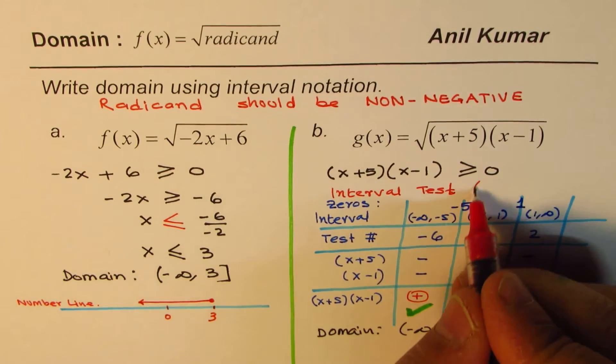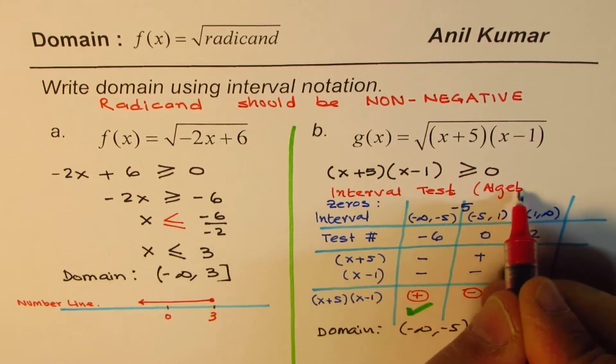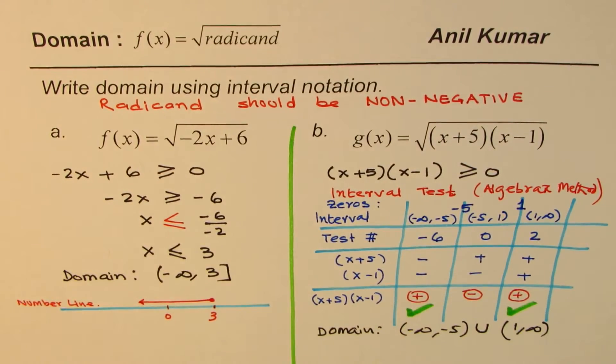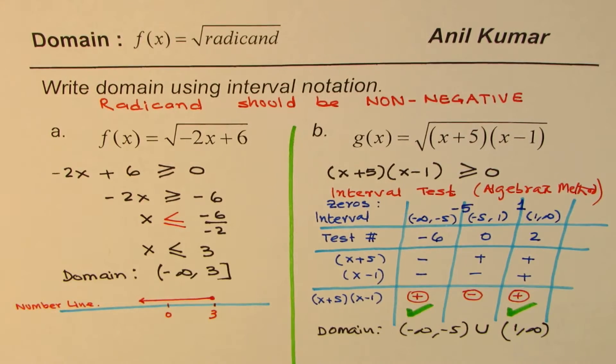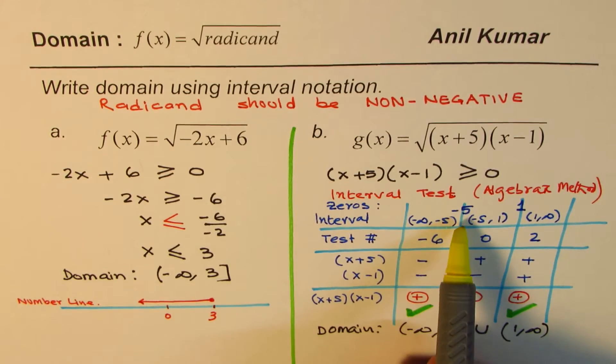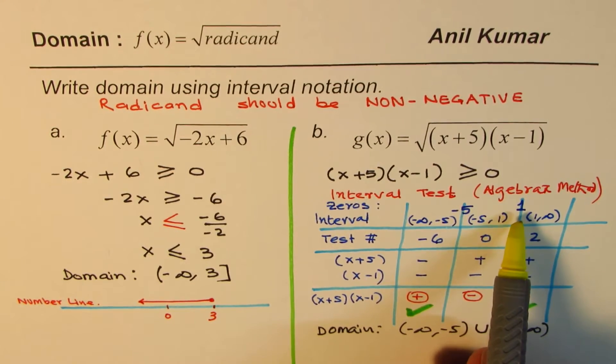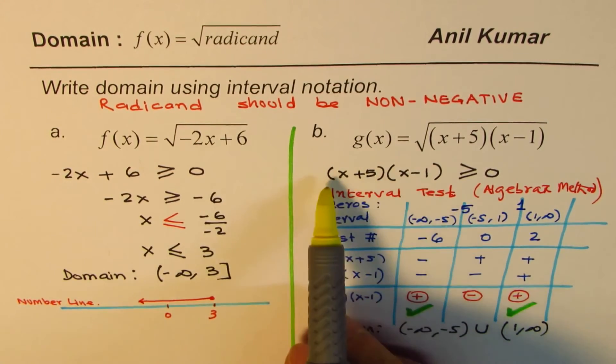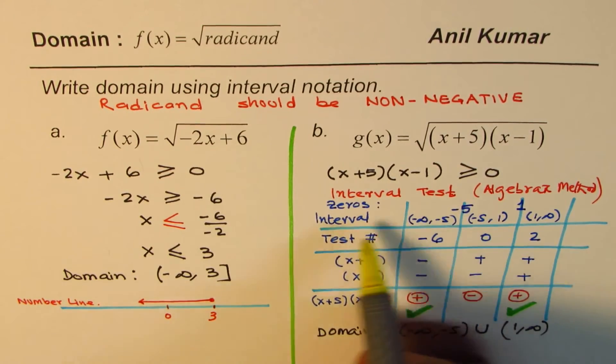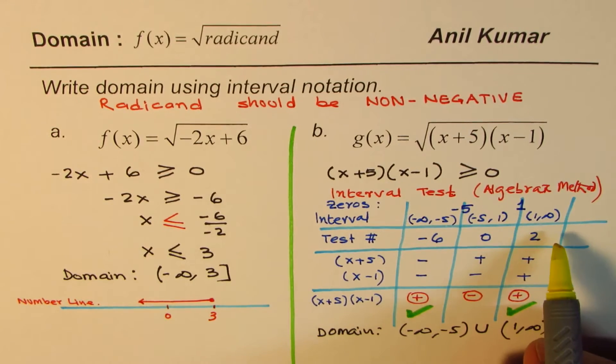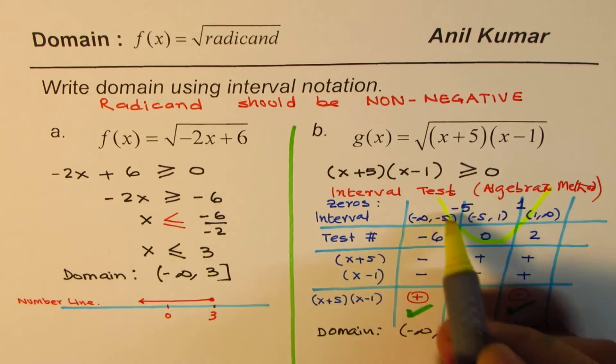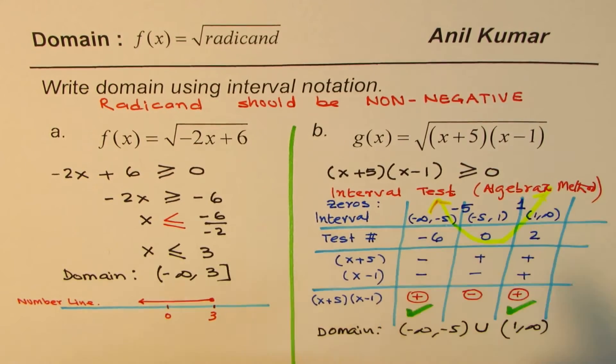We could have got this solution easily by sketching the graph also. Since we found that the zeros are at -5 and 1, and the x² coefficient is positive, if I have to sketch this function, the function would kind of look like this, going through zeros like this.